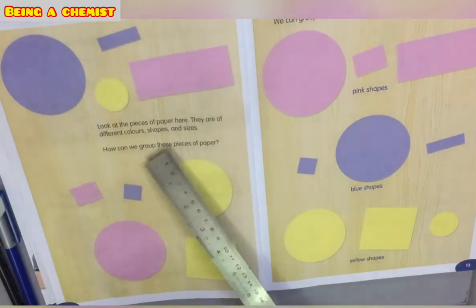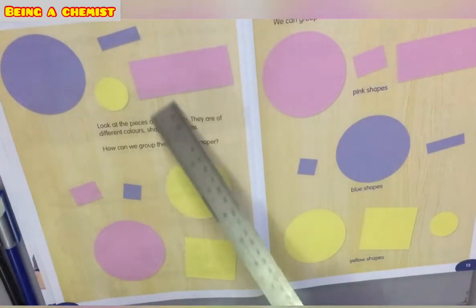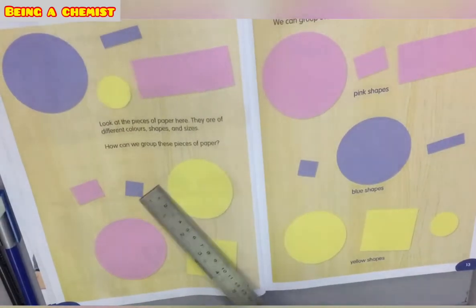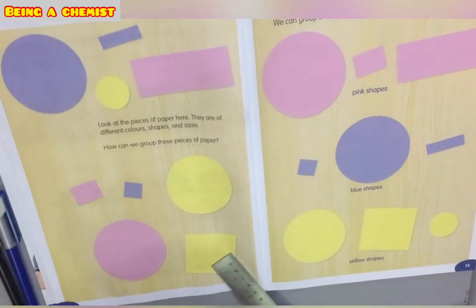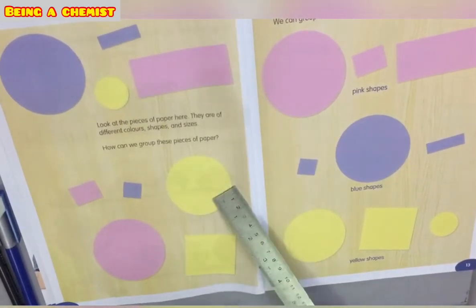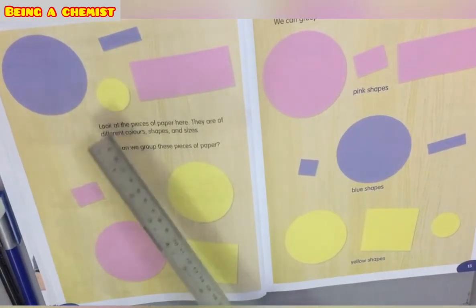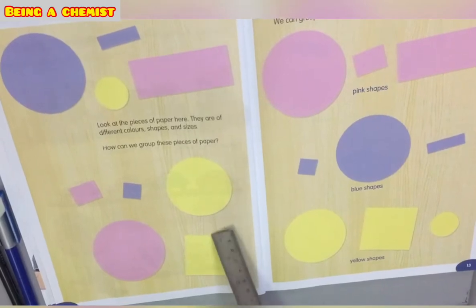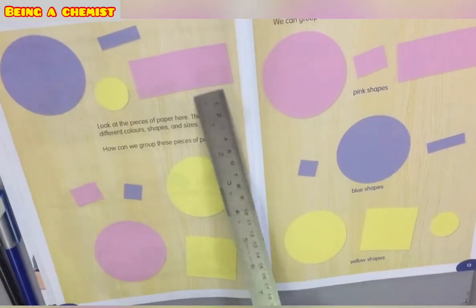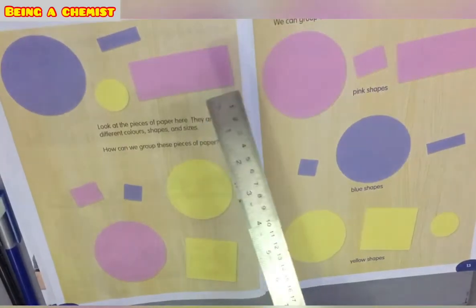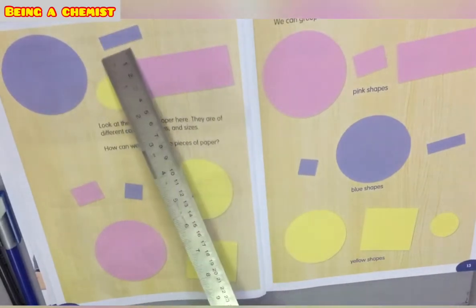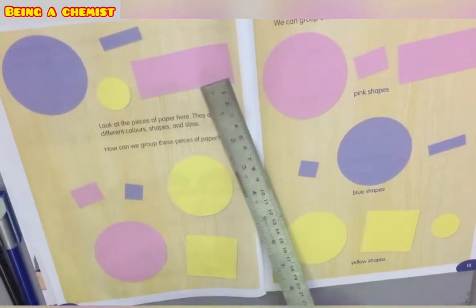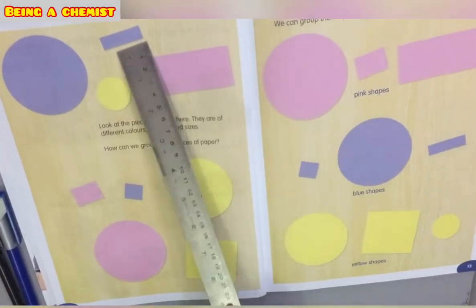These paper pieces are of different colors and shapes. Some are square, some are round or circle shapes. They are also of different sizes. Here is a rectangle shape, but this rectangle is larger in size, while this piece of paper is also a rectangle shape but smaller in size.